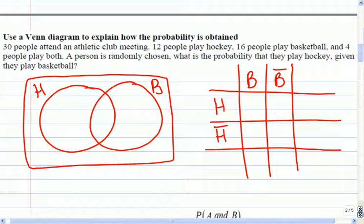Let's do the Venn diagram. It says 4 people play both, so 4 play hockey and basketball. How many people just play hockey? Eight. There's 12 hockey players; we've already counted 4 of them. How many people play just basketball? 12 play just basketball. So how many people play none of the sports, basketball or hockey?